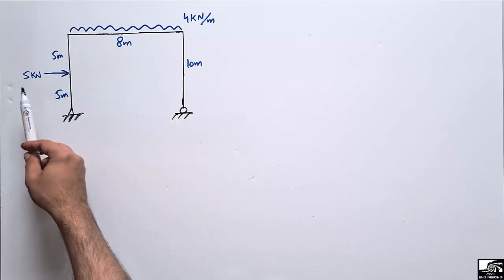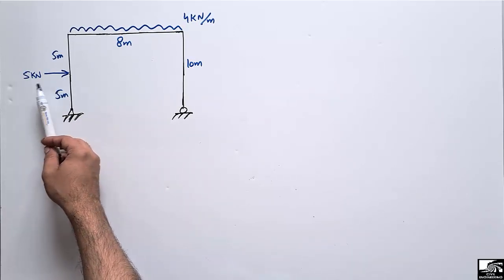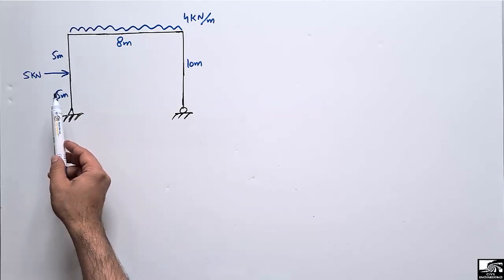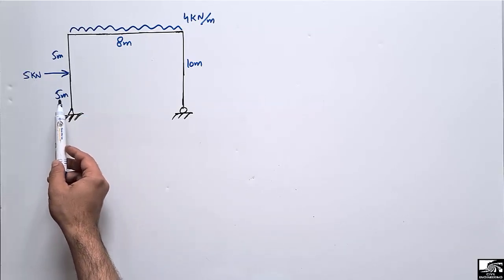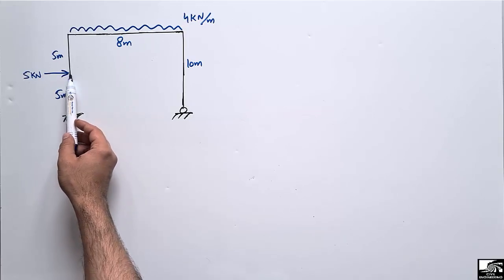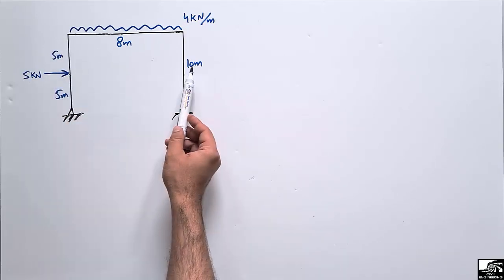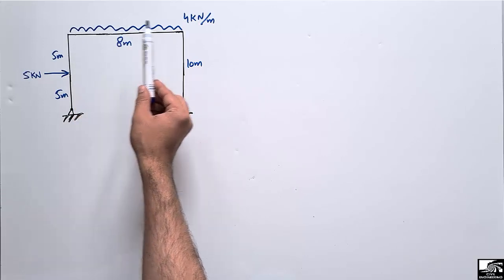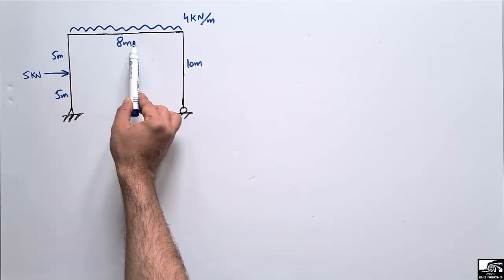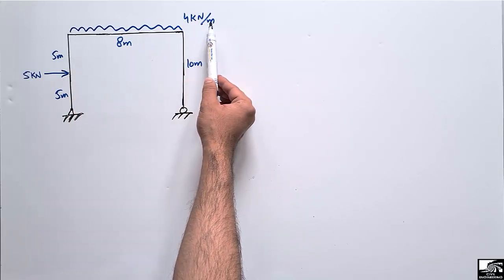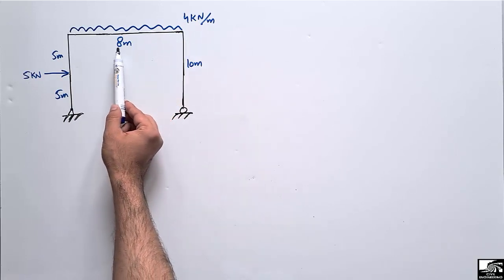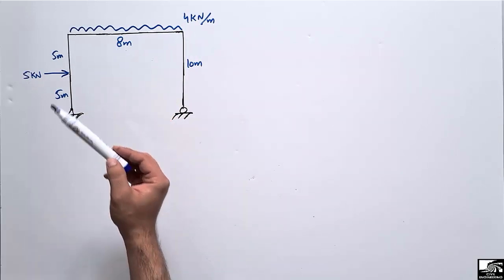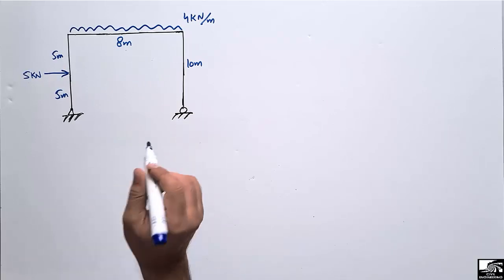There is a horizontal lateral load acting on one column with a magnitude of 5 kN, acting at a distance of 5 meters from the support. The total height of the column is 10 meters. The uniformly distributed load acting on the beam is 4 kN/m, distributed over the whole length of the beam which is 8 meters.